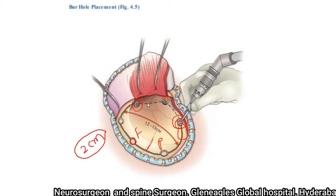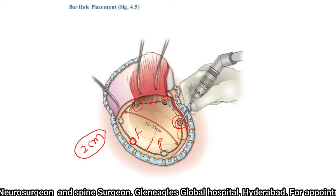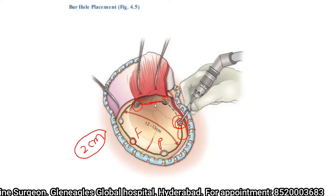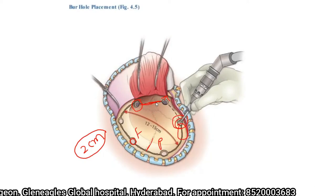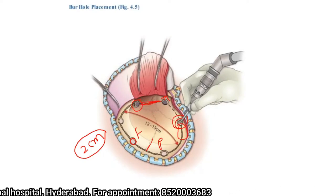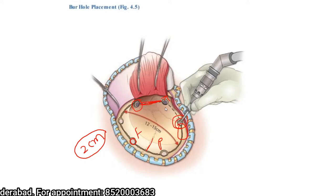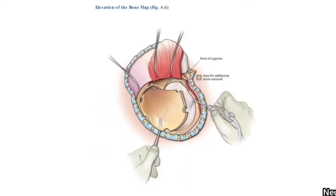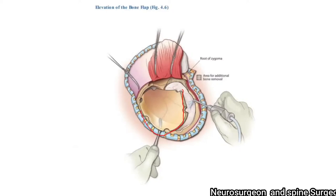At the sphenoid ridge, I drill the sphenoid ridge with a burr to make it papery thin. Then, once I have placed the burr holes, I use a craniotome to complete the cuts.